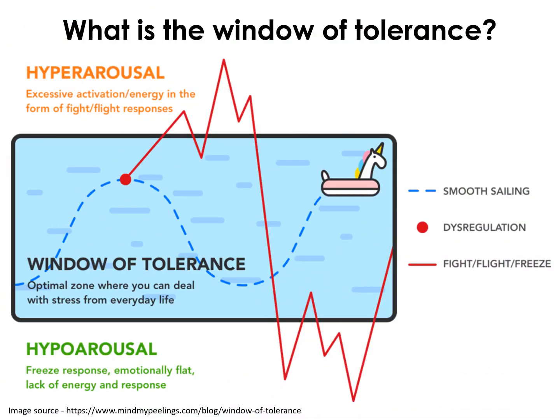Everyone is different. We all have a window of tolerance — a space where we can have ups and downs in response to various situations, but generally we can cope with our emotions and behavioural responses. This is shown by the blue zone. However, depending on our early experiences, this window can affect how we cope.